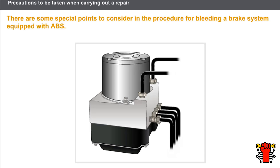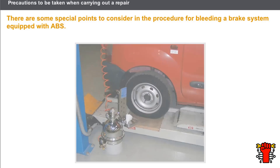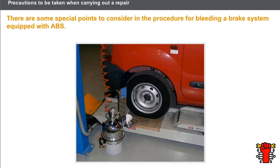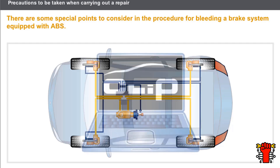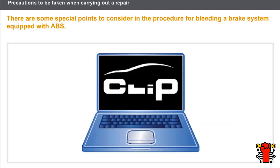An operation on the ABS unit may require opening of the hydraulic circuit, so it is necessary to bleed the brake circuit once the operation is completed. There are some special points to consider in the procedure for bleeding a brake system equipped with ABS. In addition to the usual bleed operation, there is the additional bleed operation for the hydraulic unit and its various circuits. The bleed operation for the ABS unit may require the use of a clip to open the hydraulic unit solenoids to evacuate the air.